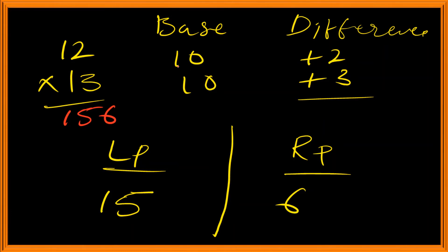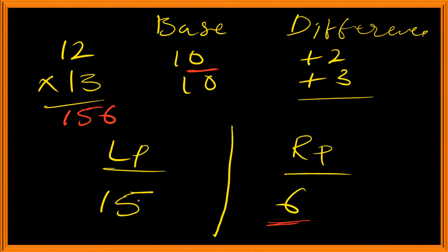We have to remember: the number of zeros in the base is equal to the number of digits in the right part. In case there is an extra digit in the right part, we have to carry it over to the left part.